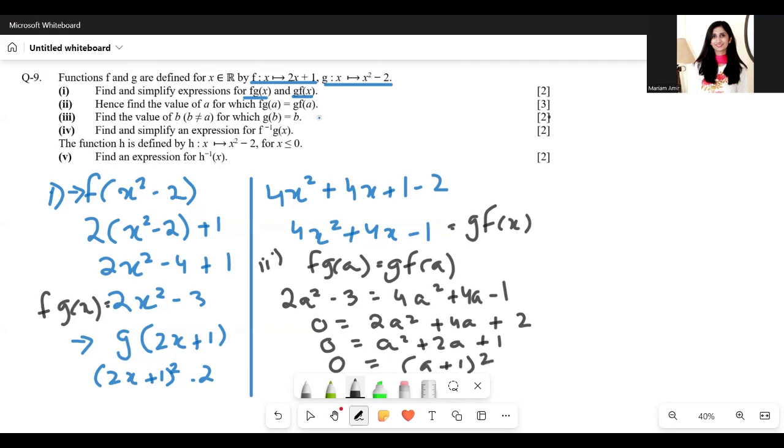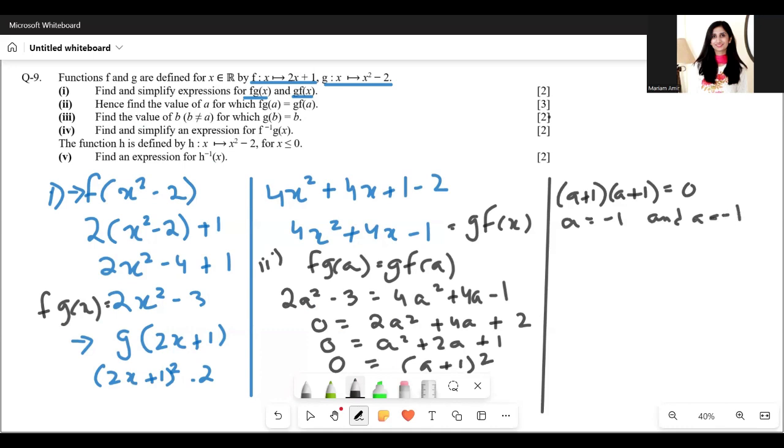You could also do middle term breaking and get the same result. This gives us (a plus 1)(a plus 1) equals 0. So a equals negative 1 and a equals negative 1. So a equals negative 1 is our answer.